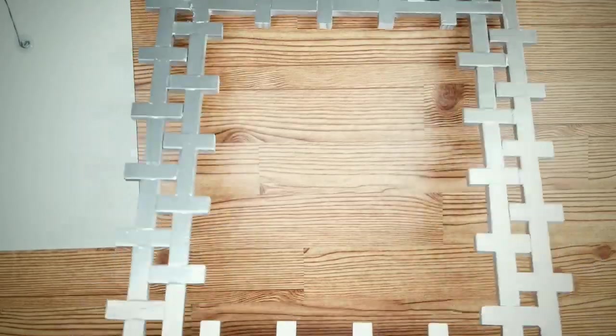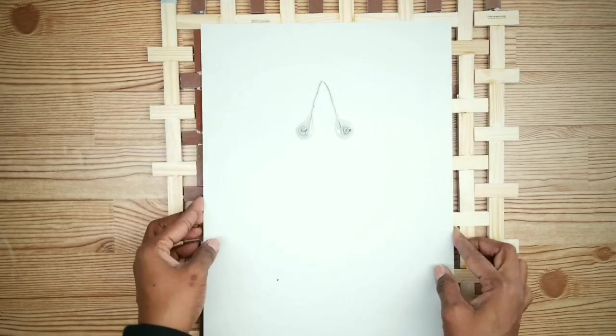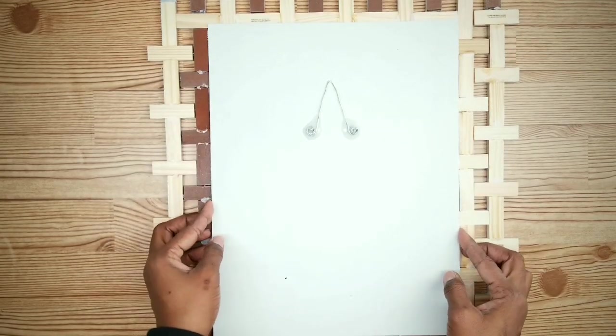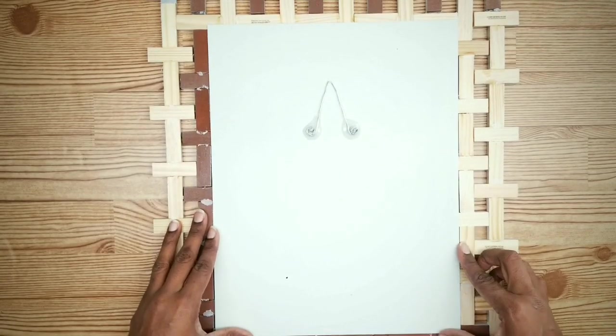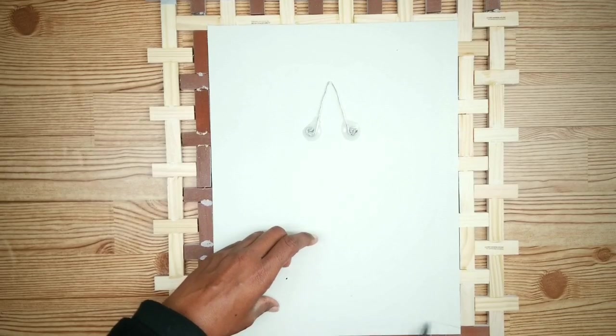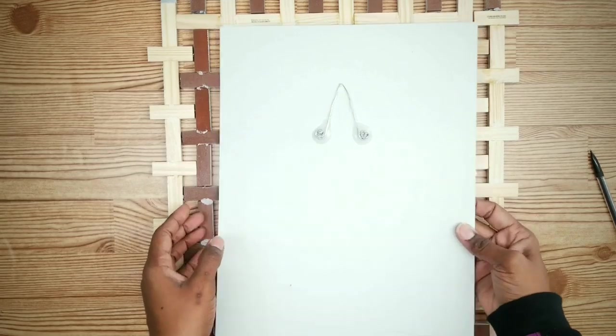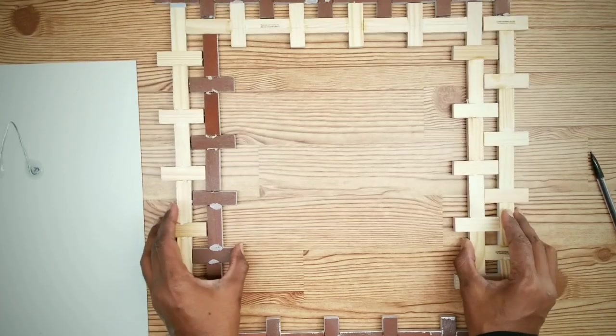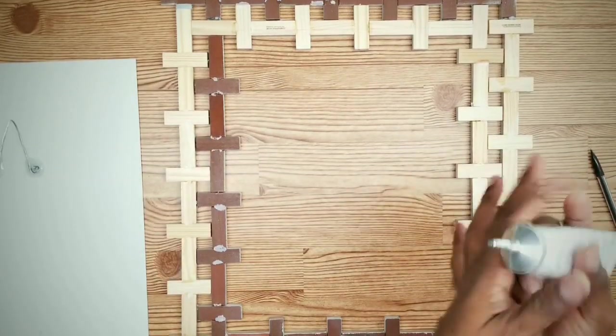Now that our frame is dry, we can go ahead and apply the mirror. Flip the frame over and we want to place the mirror on top of the frame facing down. Take a pencil and mark the top and the bottom edges for proper alignment so when we glue it down, we know exactly where to place it.